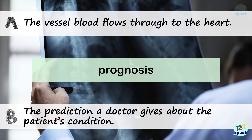Prognosis. A: The vessel blood flows through to the heart. B: The prediction a doctor gives about the patient's condition. The correct answer is B — 'The prediction a doctor gives about the patient's condition.'